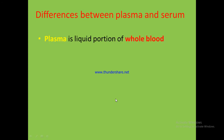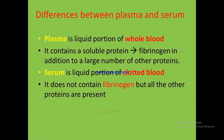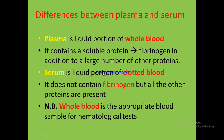The difference between plasma and serum: Plasma is the liquid portion of whole blood and contains soluble proteins such as fibrinogen, in addition to a large number of other proteins. Serum is the liquid portion of clotted blood but does not contain fibrinogen, because fibrinogen is consumed during blood clotting. These are the key differences between serum and plasma.